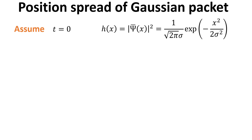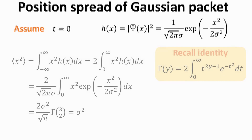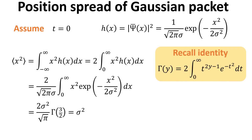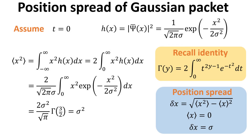As a final exercise, let us look at the position and momentum spread of our Gaussian wave packet. Let's consider the packet at t equals zero. The probability density h(x) is given by the modulus square of the wave function, as shown. We can compute the mean of x squared using the identity of the gamma function in the yellow box. You should be able to show that the mean of x squared is given by sigma squared. The position spread, defined as the square root of the difference of the mean of the square and the square of the mean, would then be sigma.